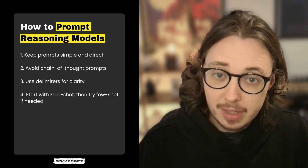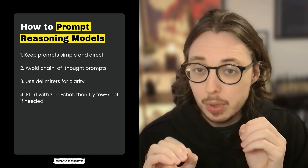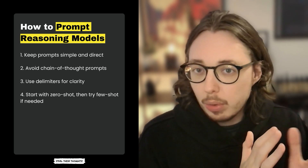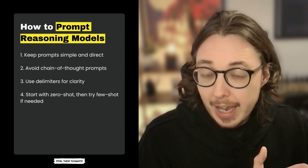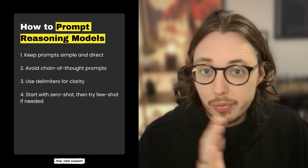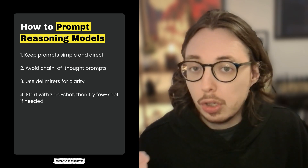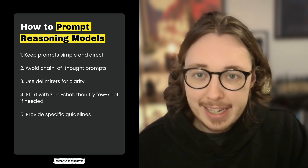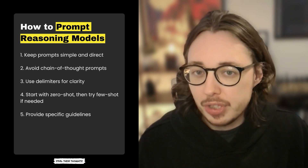Fourth, start with zero-shot prompting, then try few-shot if needed. Zero-shot prompting is a simple question-answer prompt with no examples. Few-shot prompting includes one or two examples that help the model understand what output you're looking for. Begin with prompts that don't include examples, because reasoning models often don't need them. But if your task is complex and the model is struggling, add a few clear input-output examples that align closely with your instructions. Fifth, provide specific guidelines — clearly define any constraints up front to ensure more precise responses.